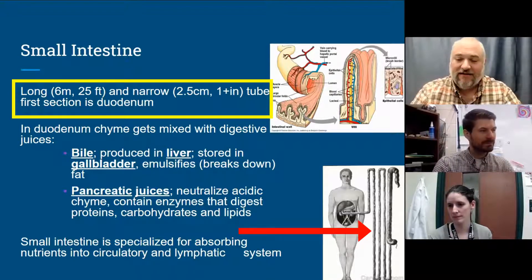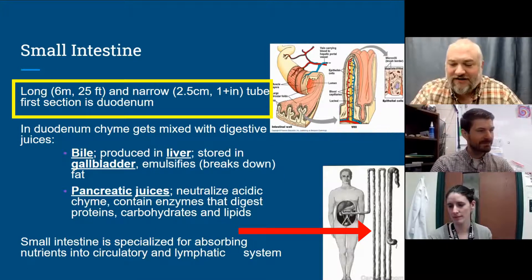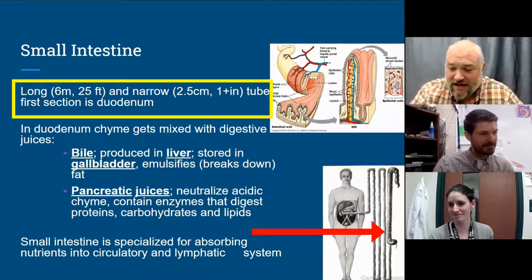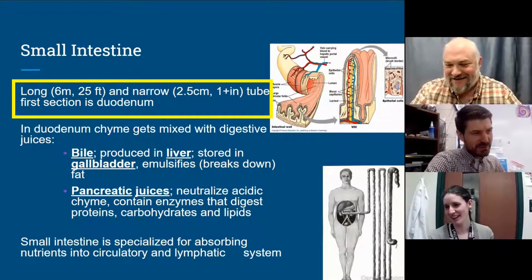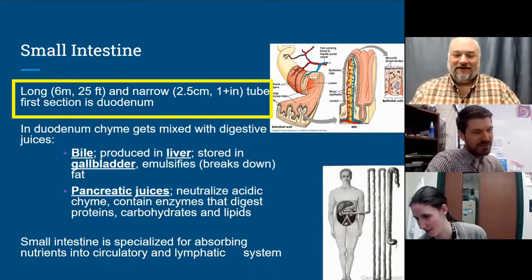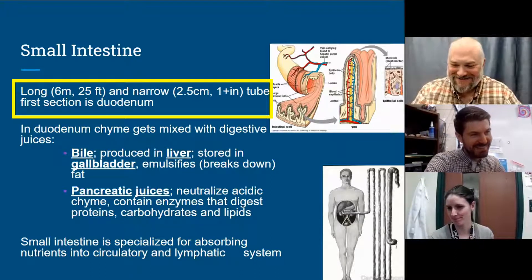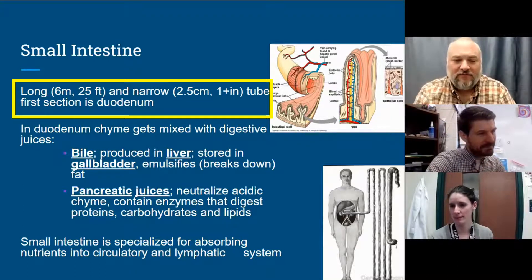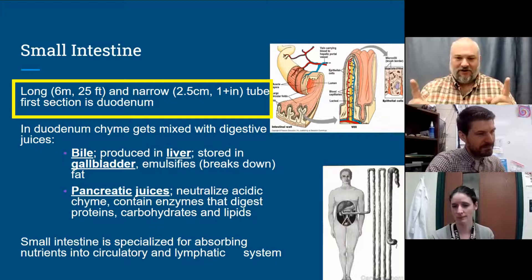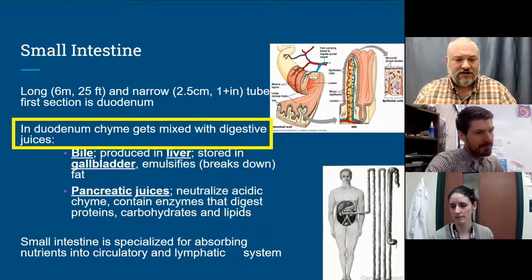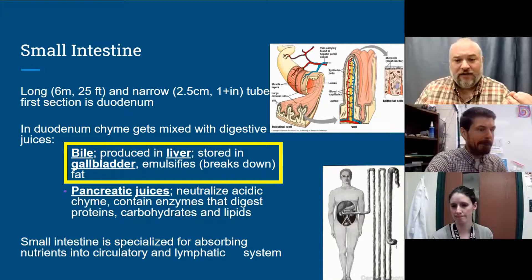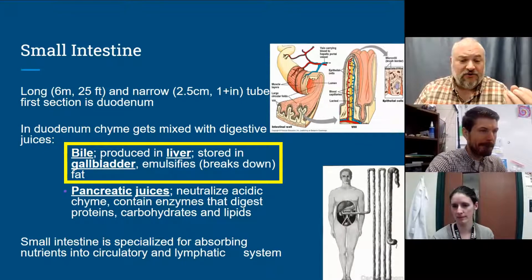You can see the length in that lower right-hand picture — the small intestine running into the large intestine. So that food gets to the duodenum, which is the first part of the small intestine. It's only about this long, wraps around underneath the stomach, and in there the food gets mixed with some digestive juices made by accessory organs. You add bile, which is made in the liver and stored in something called the gallbladder, and the job of the bile is to emulsify — or break down — fat.